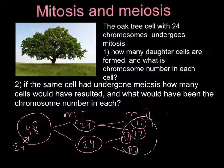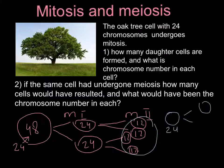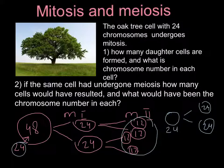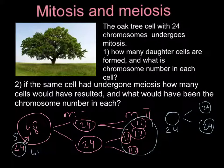This produces four cells with half the normal chromosome number. So if we start with 24 chromosomes at the beginning of the cycle, the cell doubles to 48, then is divided by half in meiosis 1, then divided by half again in meiosis 2. We end up with four cells each having 12 chromosomes — half the number we started with. This is how meiosis differs from mitosis.